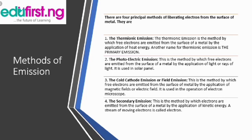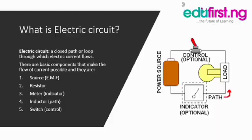The fourth method is secondary emission. This is the method by which electrons are emitted from the surface of the emitter by the application of kinetic energy — that is, energy in motion. A stream of moving electrons is called an electron beam. These four methods are the major processes by which emission of electrons occurs from the surface of a metal.